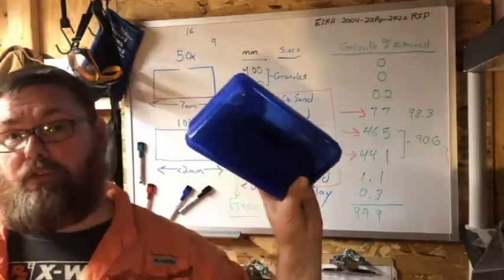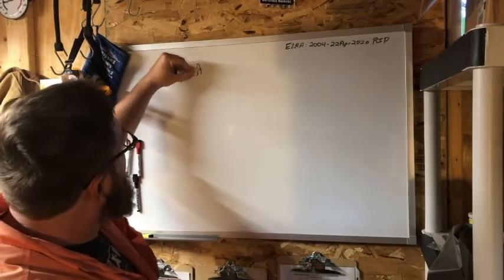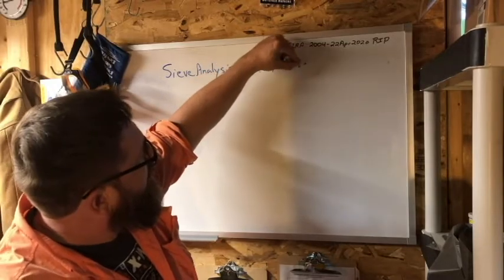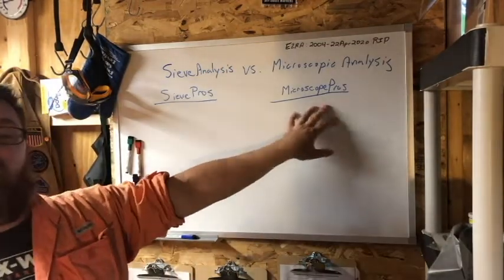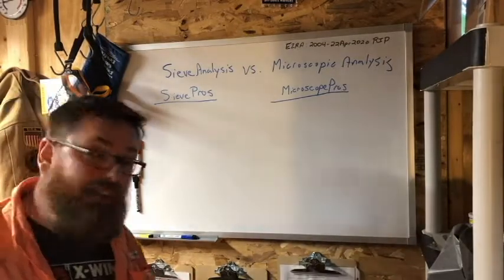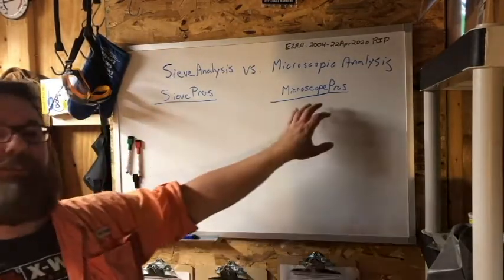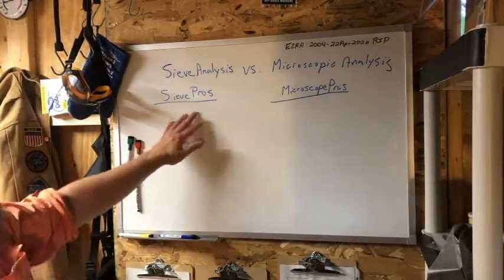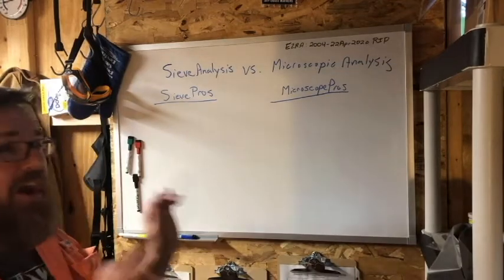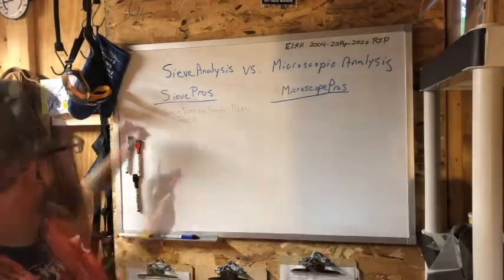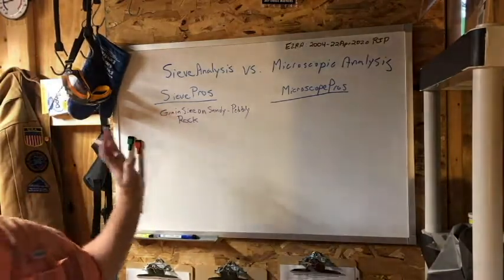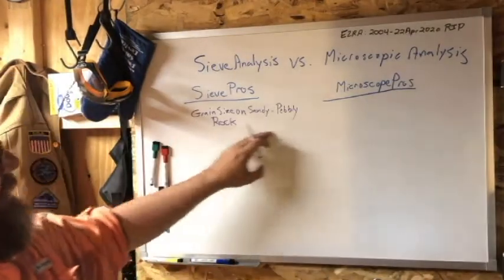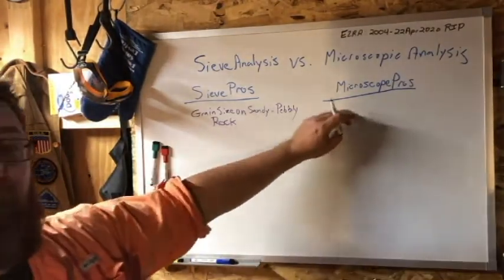The microscope, our sieve analysis versus our microscope. Sieve pros, microscope pros. I'm not going to do pros and cons because a pro here is generally a con there. I'll explain that. Our sieves, what do those do? They give us a very accurate grain size on sandy to pebbly rock, assuming we can mechanically break it down. A con is, what if we can't break it down? We have to go to this.